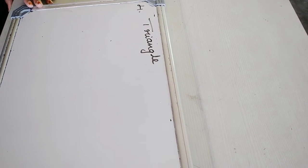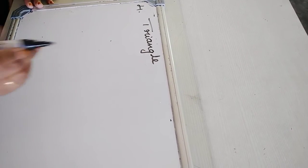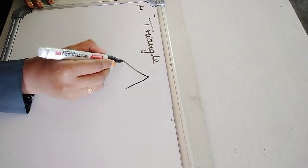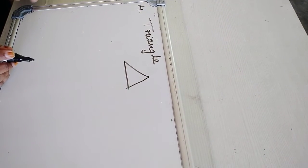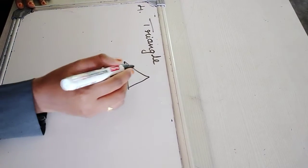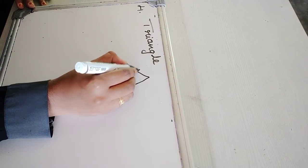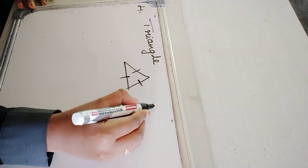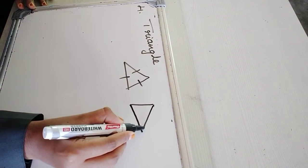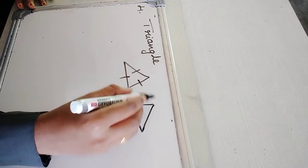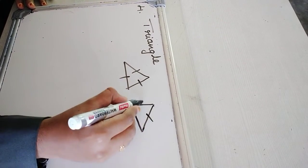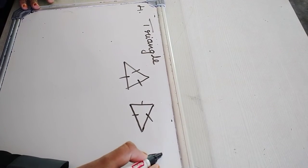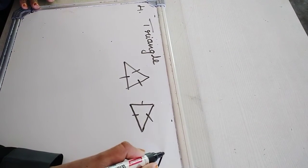Fourth one is triangle. A triangle has three sides: one, two, three. A triangle has three sides: one, two, three. Triangle.